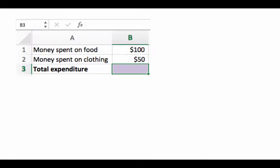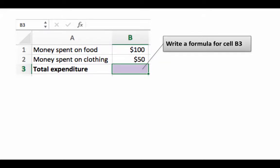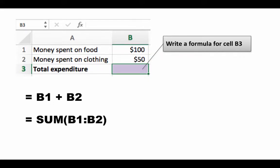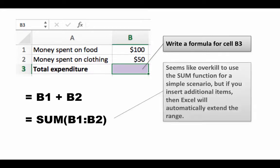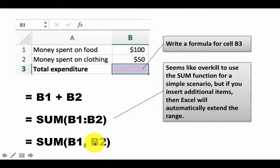Let's get some more formula practice. We've got money spent on food, money spent on clothing, and we are talking about writing a formula for total expenditure. You could write =B1+B2, but we could also write =SUM(B1:B2), and a third alternative would be =SUM(B1,B2). Let's explore each of these.